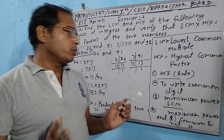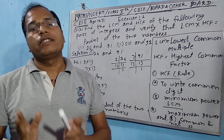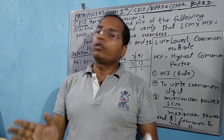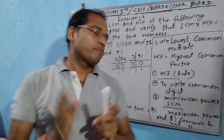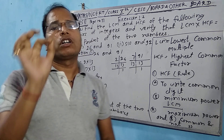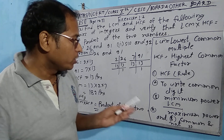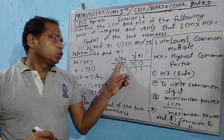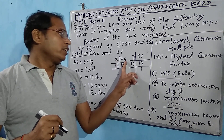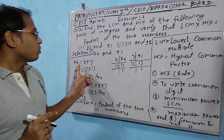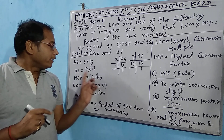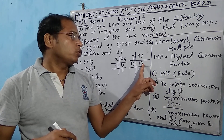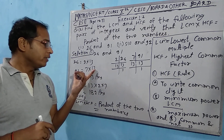What is the rule of HCF? You have to write the minimum power — less power, minimum power. Whatever is common in both numbers, write it with minimum power. Now look at 26 and 91. Prime factorize 26: 2 divided gives 13, so 26 = 2 × 13. Prime factorize 91: 7 × 13 = 91, so 91 = 7 × 13.